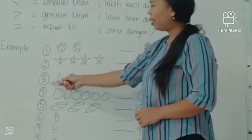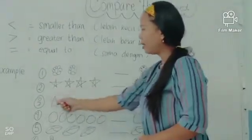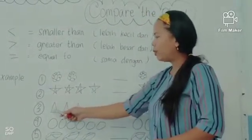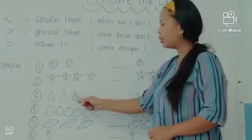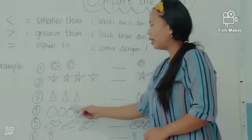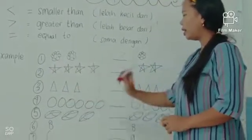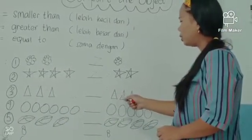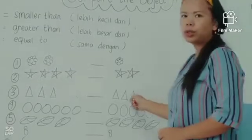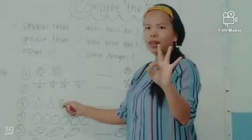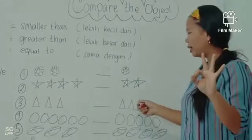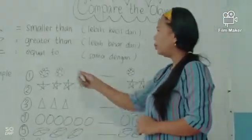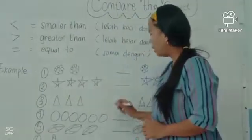Number three. The object is triangle. We count together the triangles: one, two, three. There are three triangles in the left side. In the right side, there are one, two, three. There are three triangles in the left side and three in the right side. They are equal. We can make the symbol equal.